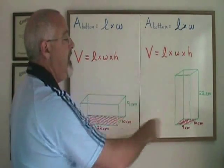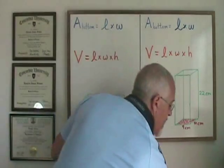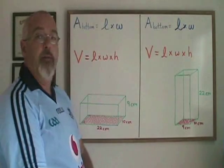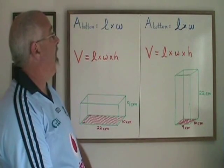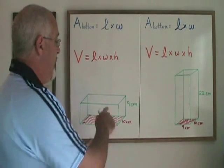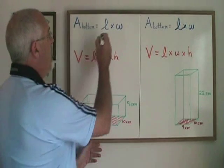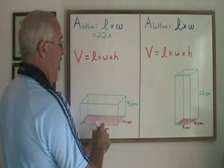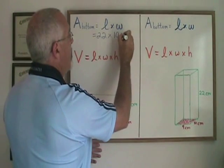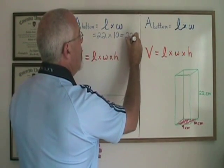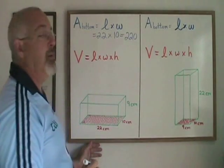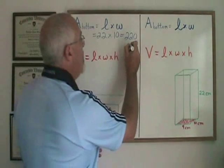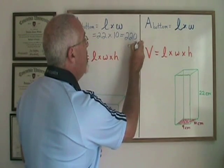So the numbers are the same. If we are asked to find the area of the bottom, we are using the area of a rectangle formula length times width. So for this rectangular prism, the length is 22 and the width is 10. 22 times 10 is 220 and my unit of measure, because these are in centimeters, will be centimeters squared for area.